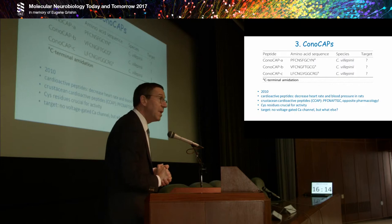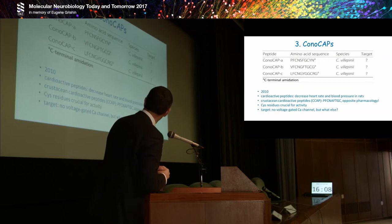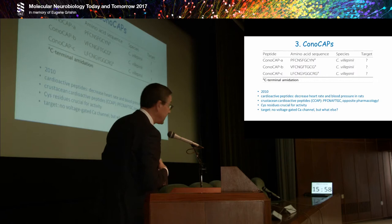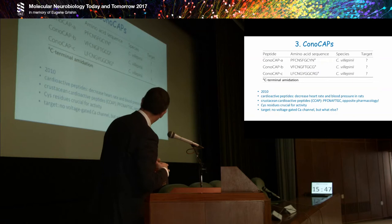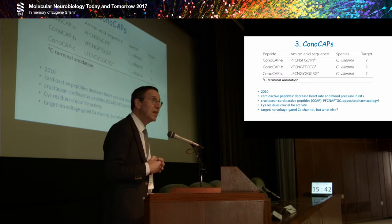Third family, the conocaps. Only three members are known. Perhaps not so important as we know now for neurobiology, but more for cardio-physiology. They have been published in 2010. They are cardio-active peptides. It has been shown that they decrease heart rate and blood pressure in rats. Crustacean also has a similar peptide CCAP but with opposite pharmacology. We know that the cysteine residues are crucial for activity—we have one disulfide bond, which is logical. But the target is still a mystery. People have assayed it on voltage-gated calcium channels. We also have assayed it on many of our targets in the lab. We have not found a hit.